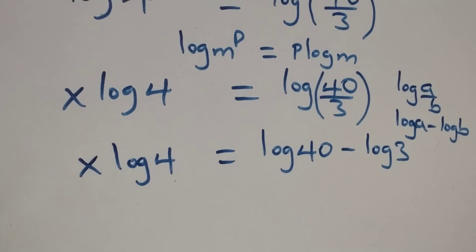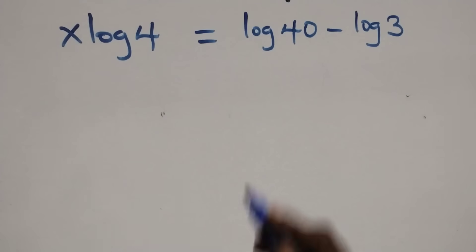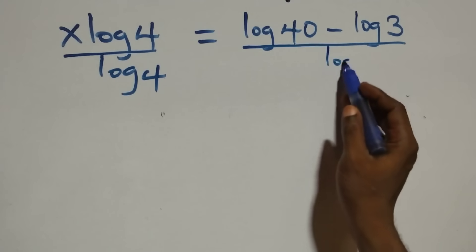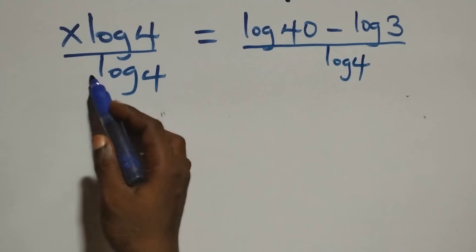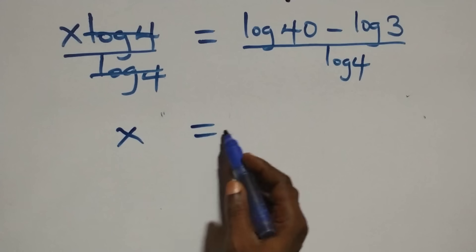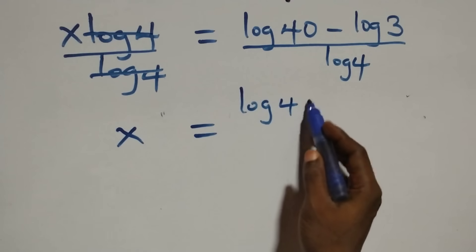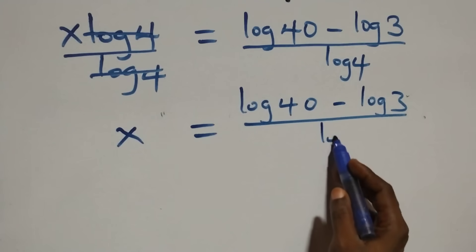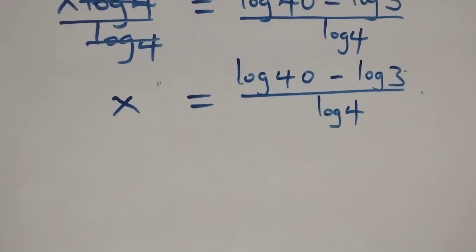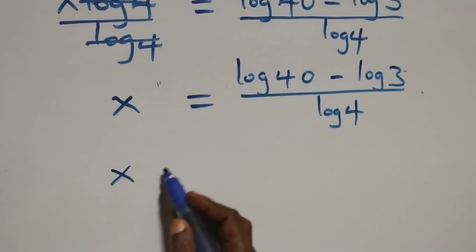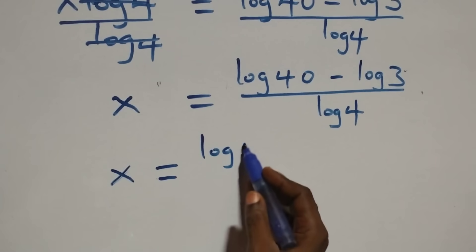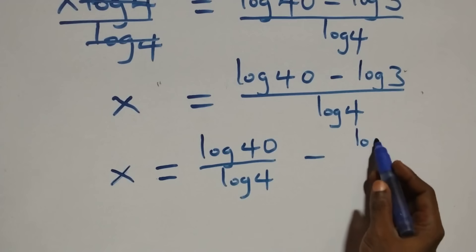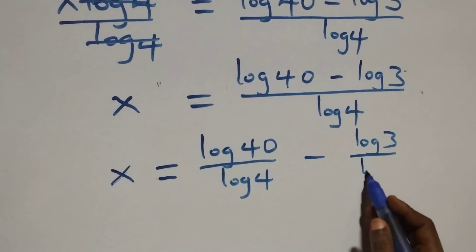The next step here, we divide both sides by log 4. That is, divide this side by log 4, also divide this side by log 4. Which implies log 4 cancelled each other. We have x now equals to log 40 over log 4 minus log 3 over log 4.